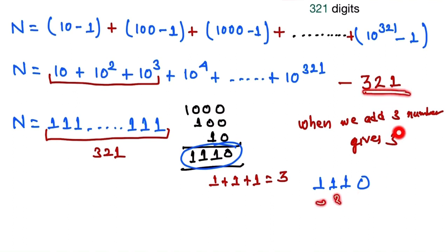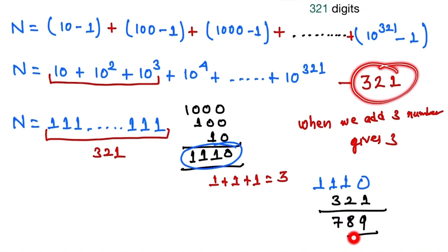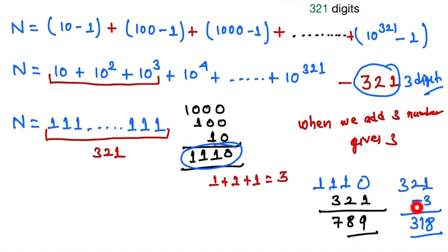Now we subtract 321, so it gives 789. So the last 3 digits of this number, of the final answer, is 789. So it can be written as 111...111 and last digit is 789.